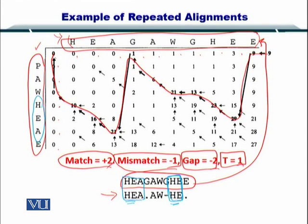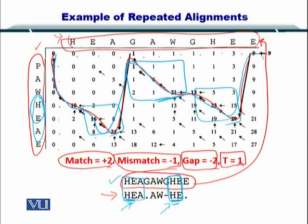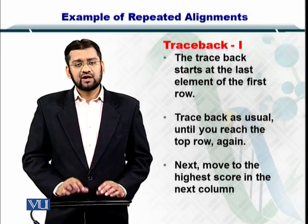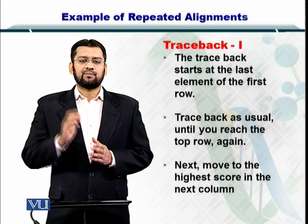The same sequence has been found two times within the longer sequence. This is what repeated alignment is all about. Now we would see how this very unusual traceback works, because this is very important in finding these matching and repeated regions. Towards the traceback strategy, the first thing you have to do is start from the top right.